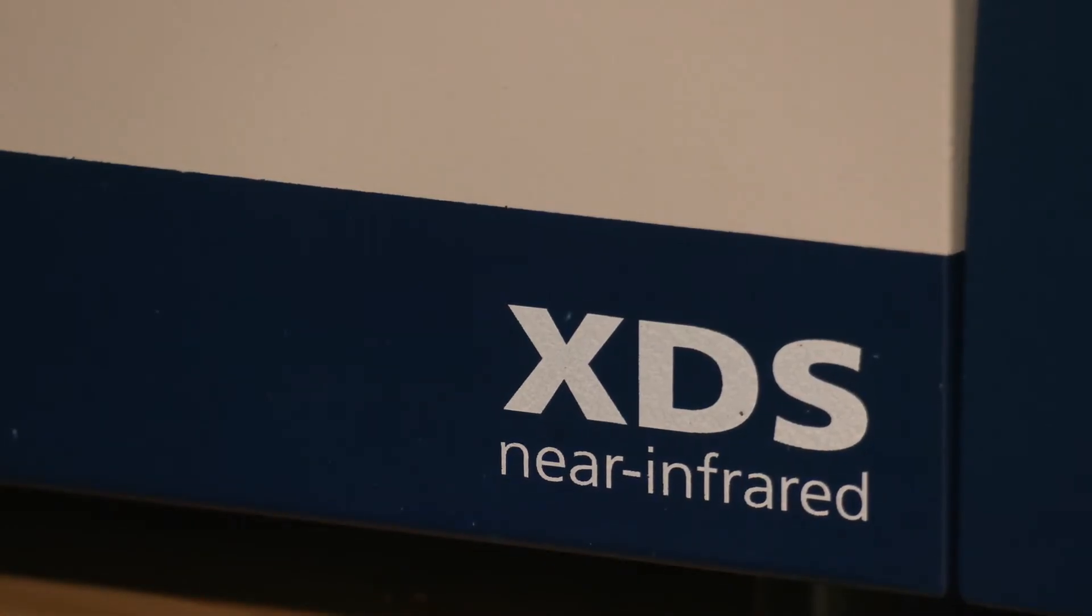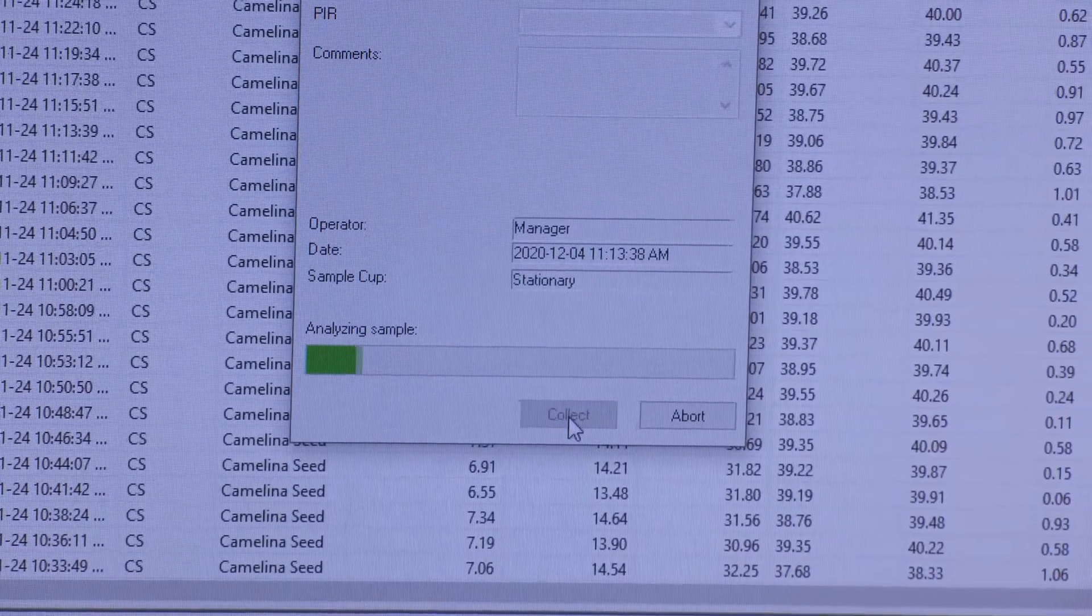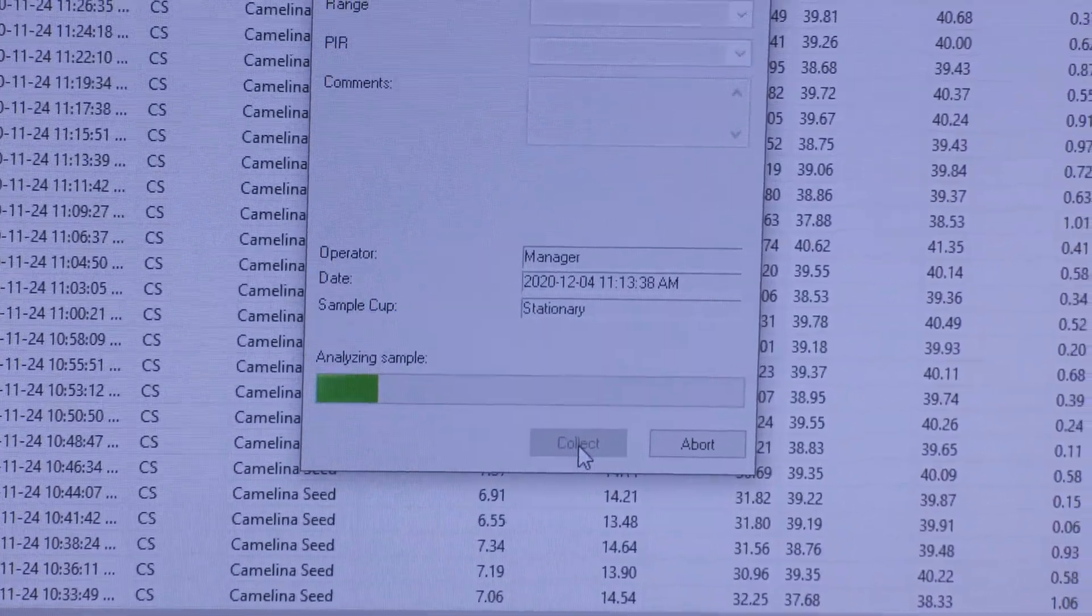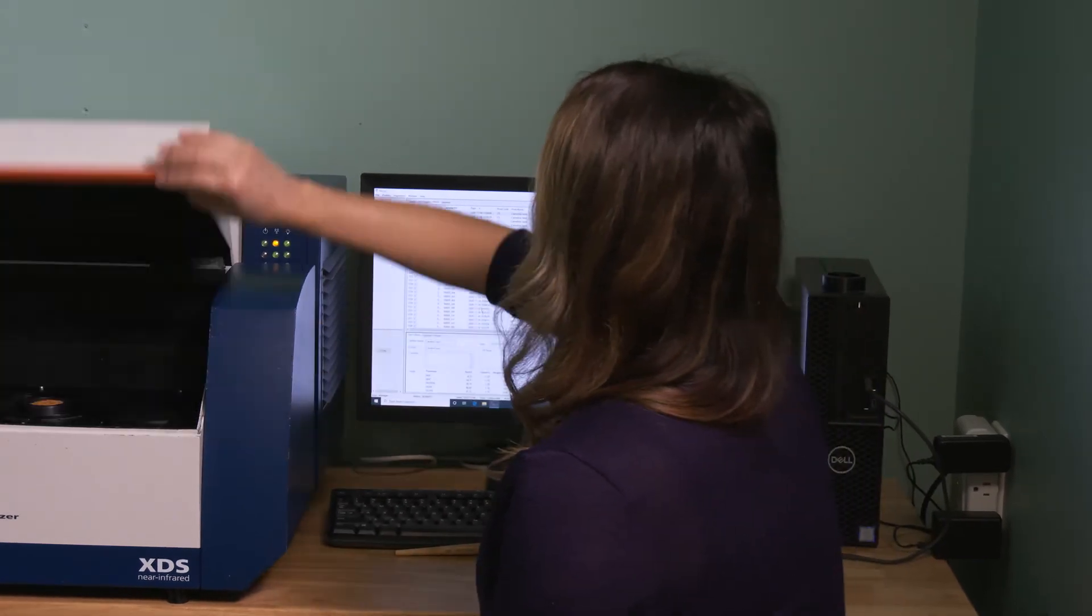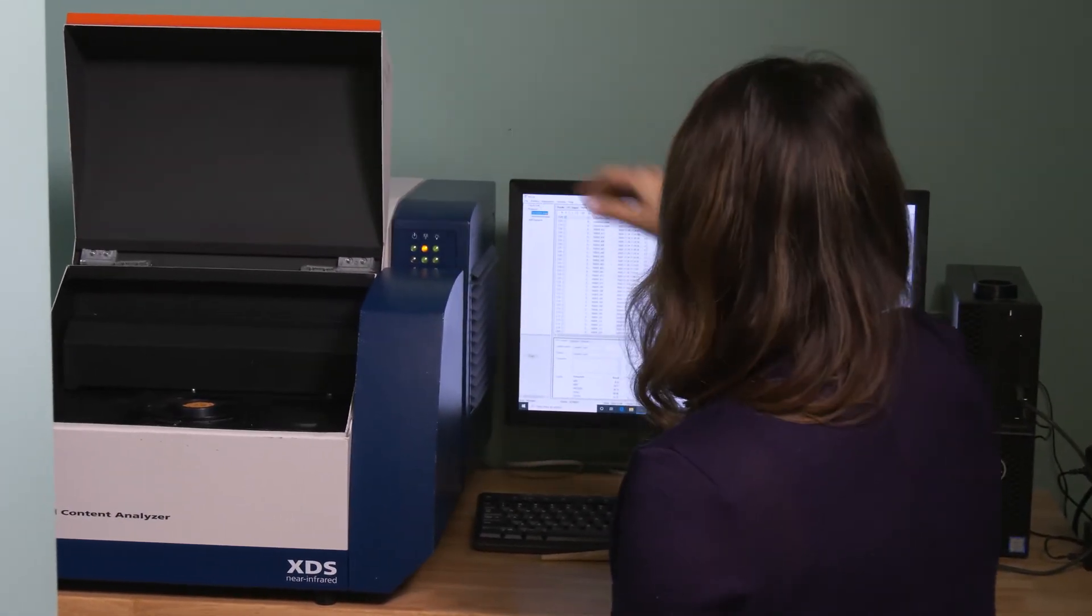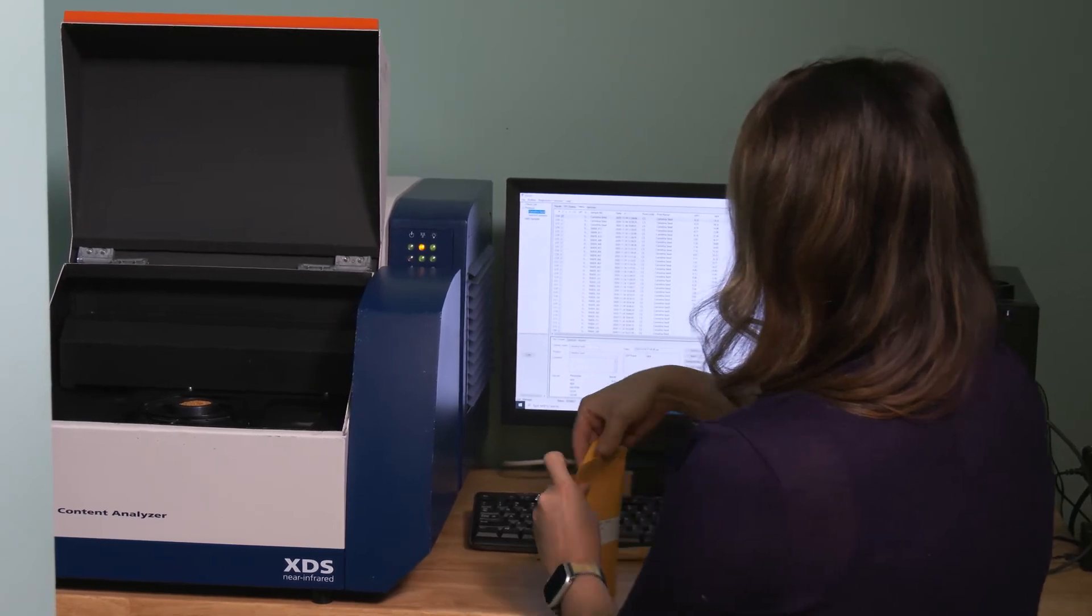This NIR machine uses near-infrared spectrometry to analyze each of our potential varieties using different wavelengths of light. It allows us to quickly determine the oil and protein content of the Camelina seeds.